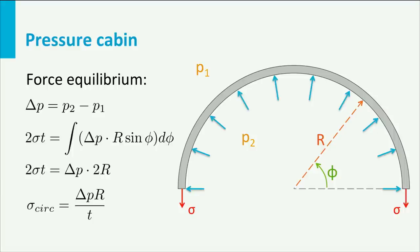On this slide the circumferential stress, or hoop stress, is calculated. We assume that the half cylinder is 1 meter in length, has a thickness T and a radius R. The pressure inside the cylinder is P2 and the pressure outside is P1, so the pressure difference delta P is P2 minus P1.